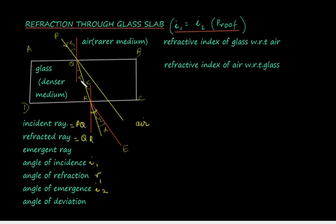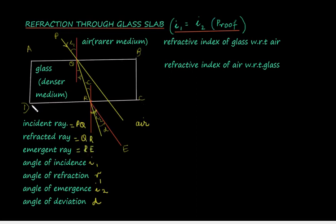The angle marked as d is the angle of deviation. The ray traveling along QR inside the glass slab should have emerged along a straight line, but it got deviated and shifted. This is the angle of deviation. The emergent ray is RE, and ABCD is the glass slab. Let us try to prove that i1 is equal to i2.